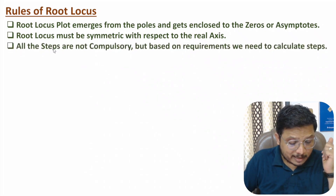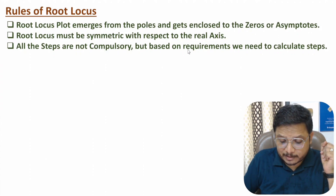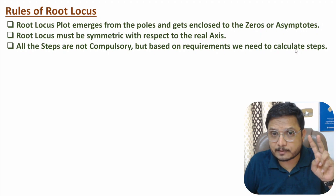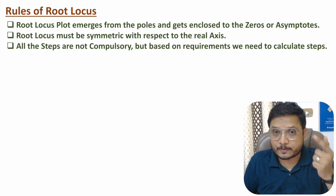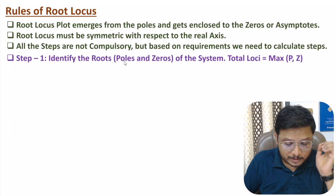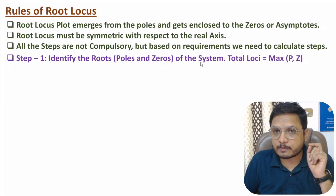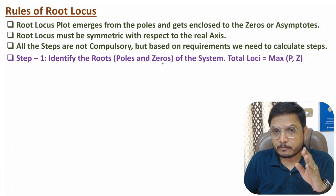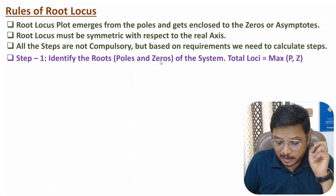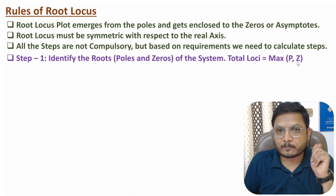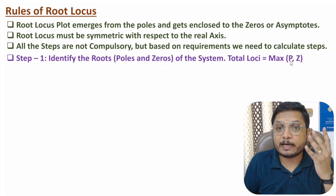There are a few standard steps I'll be explaining, but all the steps are not compulsory — we calculate based on requirements. In future videos I will be solving 11 examples. In the first step we need to identify the roots, meaning the poles and zeros of the system. Based on the transfer function you can identify the poles and zeros, their locations, and their count. The total number of loci — meaning total number of lines — will be the maximum of the number of poles and zeros. For example, if you have four poles and two zeros, the maximum is four, so there will be four lines in total.